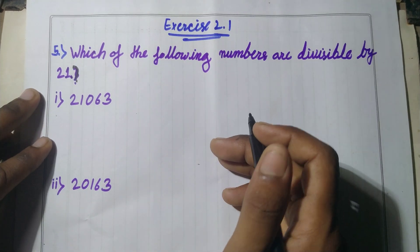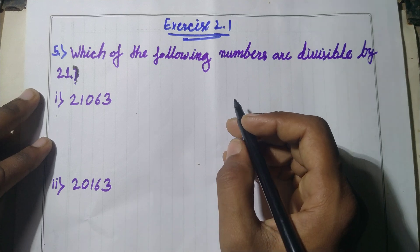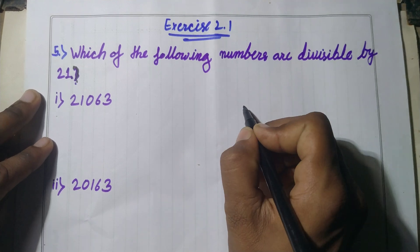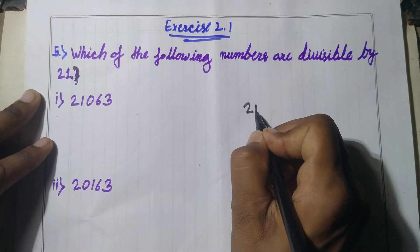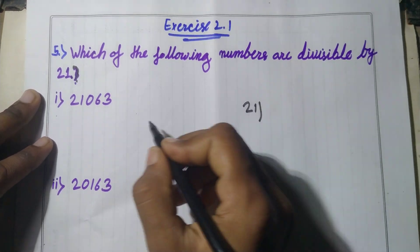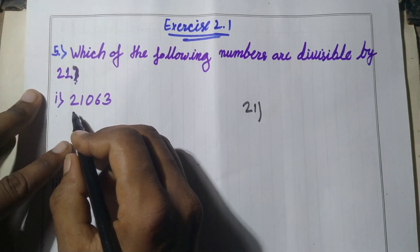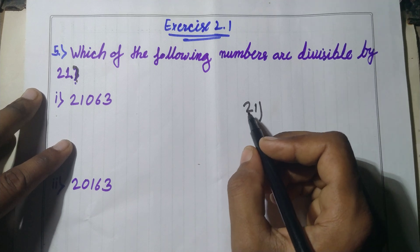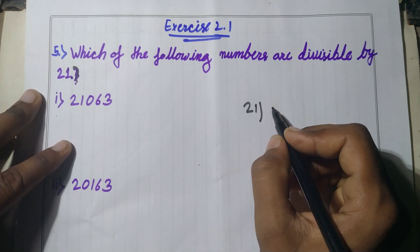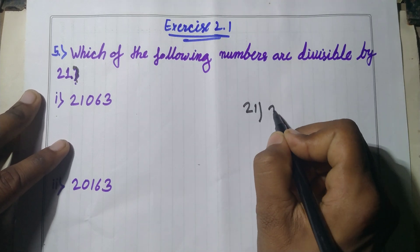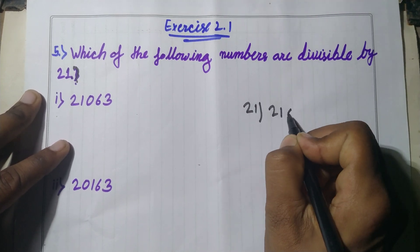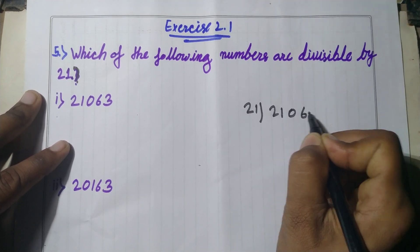Let's work through this. First of all, divide this number by 21. The number is 21063.